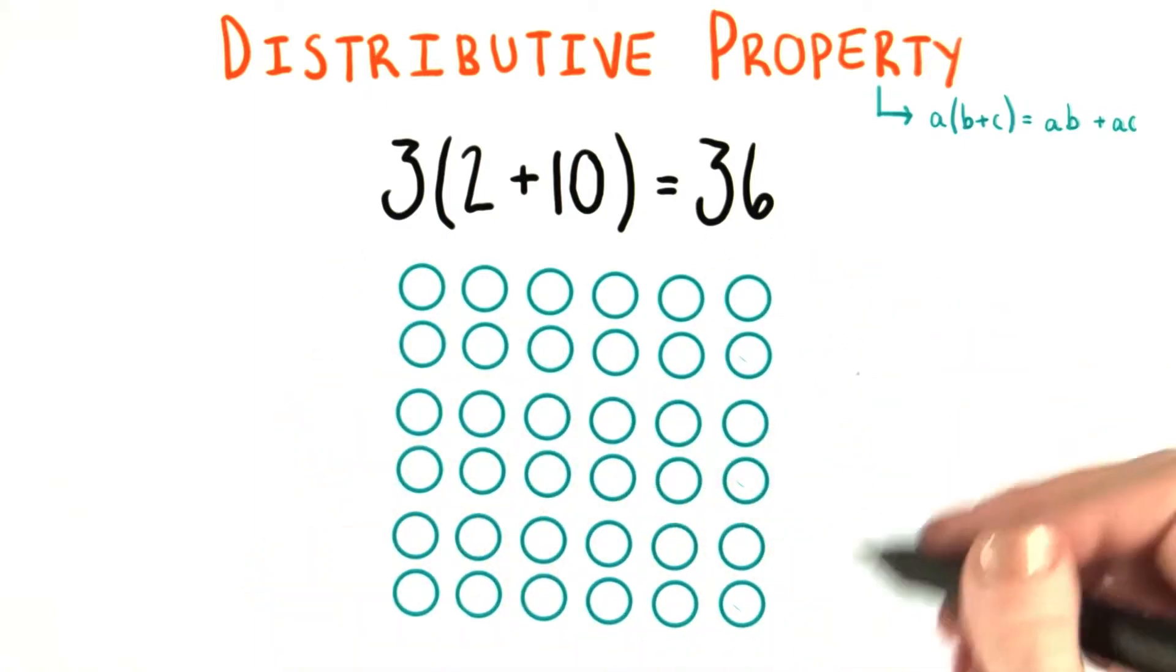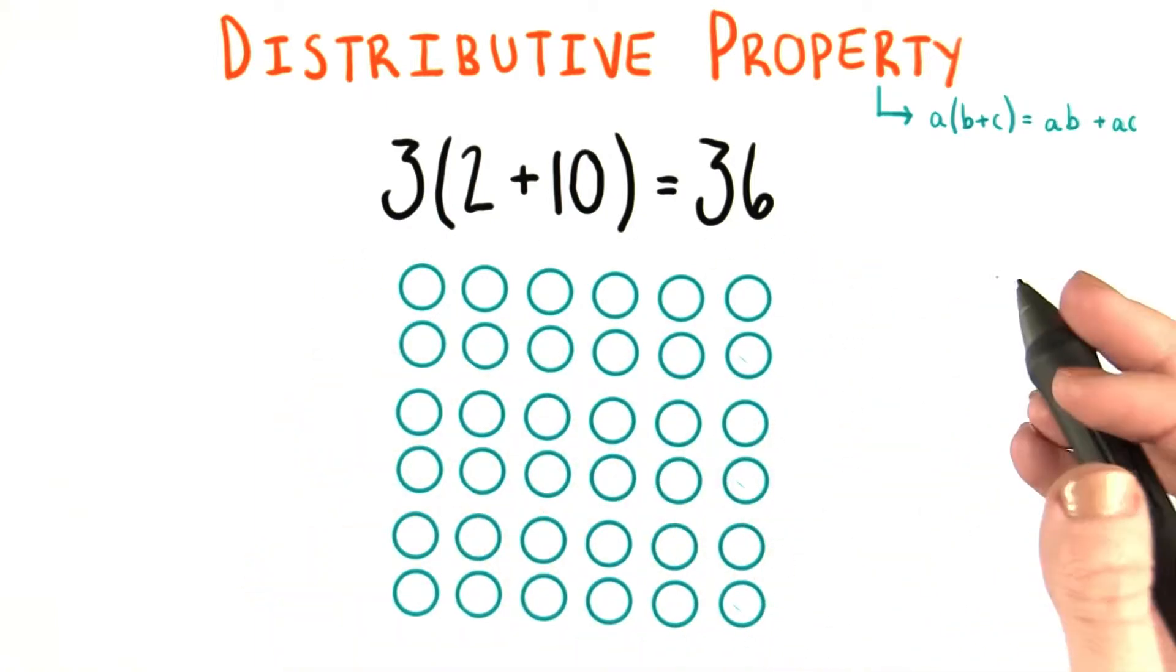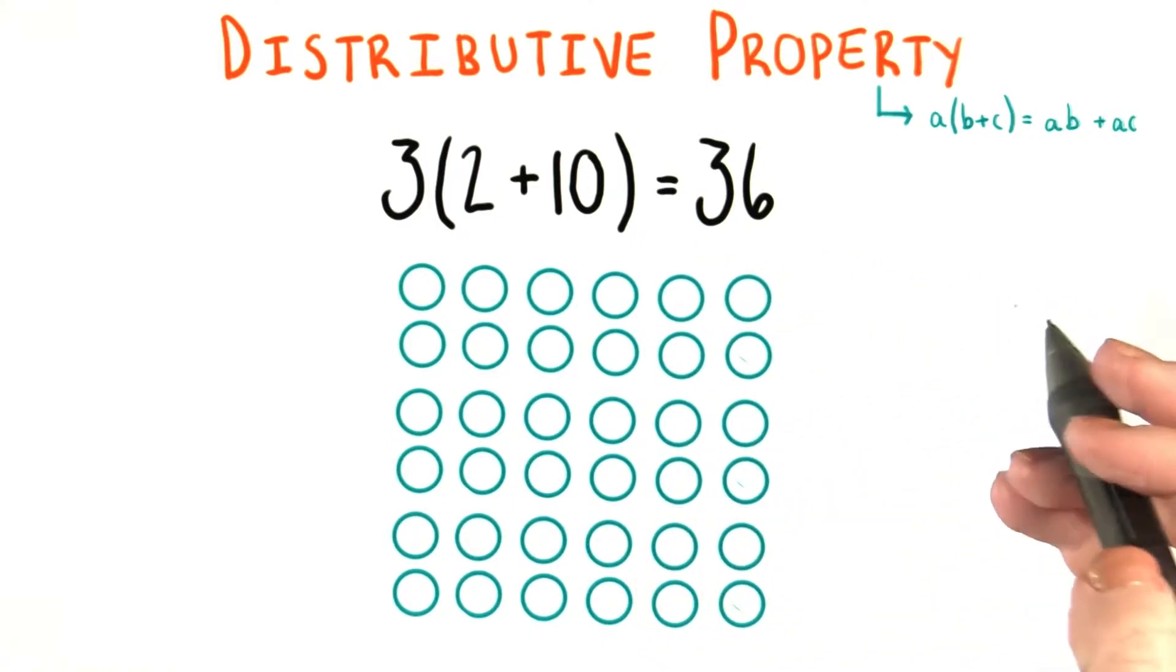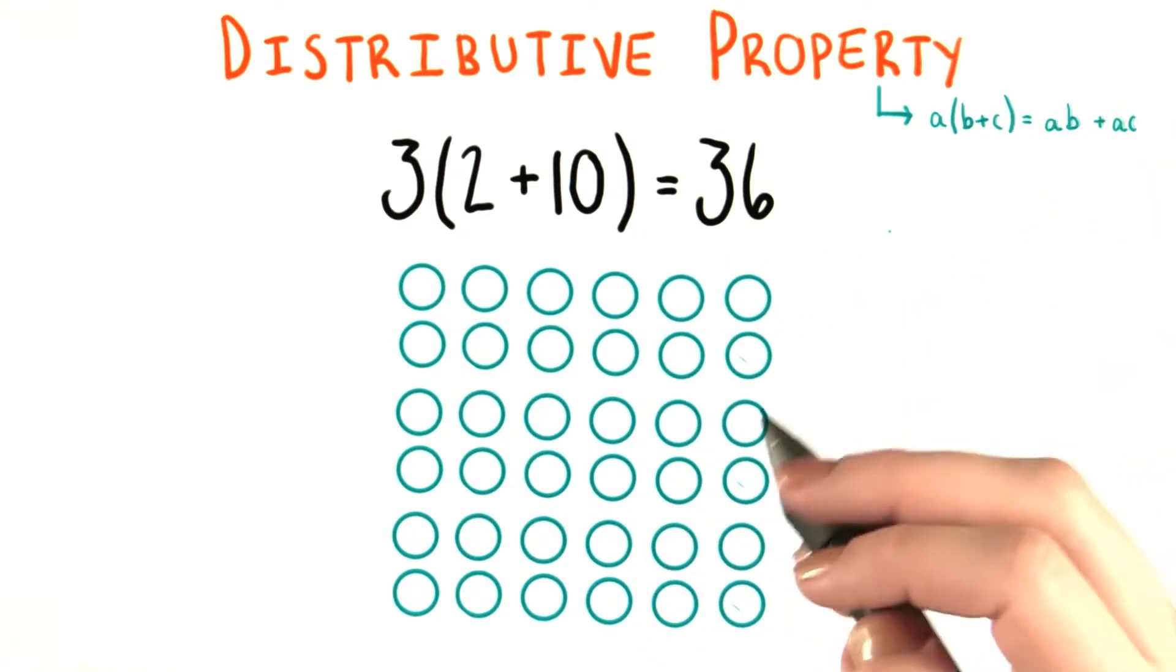I can count these up, and if I decide to do that right now, which I won't because I'm lazy, we would see that we have 36 circles. Okay, great. So that's the first method for solving this problem.